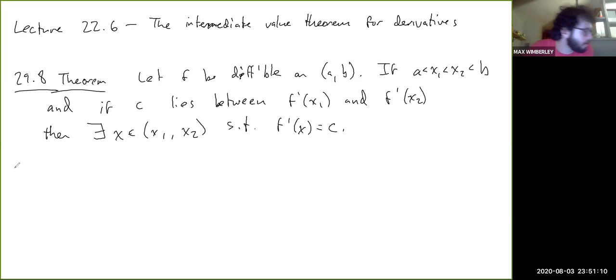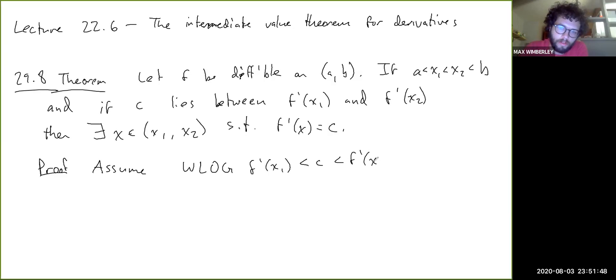Here's the proof. Let's transform the problem a bit. Assume without loss of generality—this is a symmetry thing where the opposite argument is basically the same but you just flip an inequality—so assume f'(x₁) less than c less than f'(x₂).